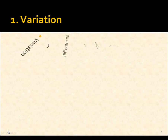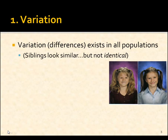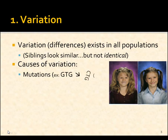Let's talk about this first one: variation. Variation — essentially differences — exists in all populations, which makes sense. Even siblings, which share 50% of their DNA, are similar but not identical. Some of the stuff that causes variation: mutations — like if your genetic code changes a GTG to a CTG — that will code for a different amino acid, possibly a different protein.